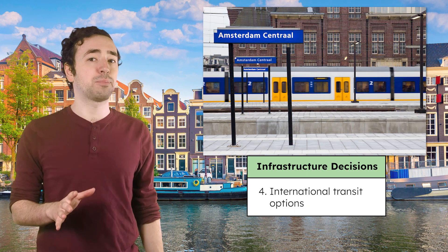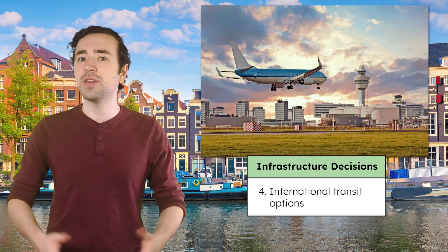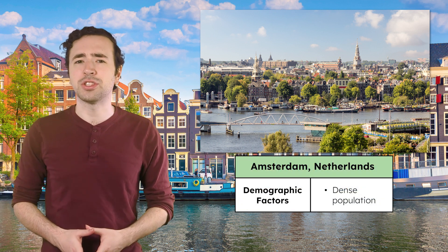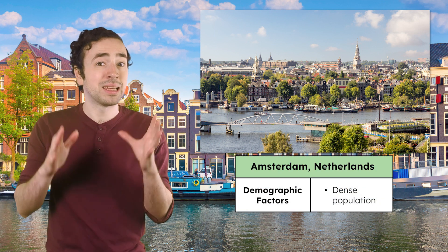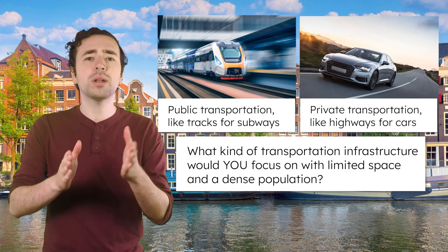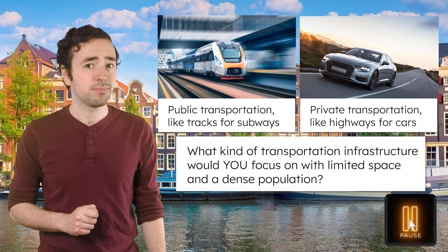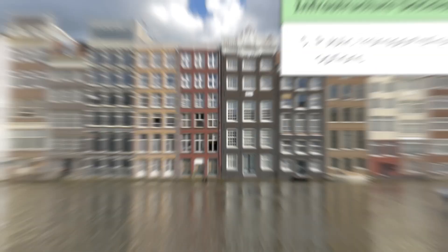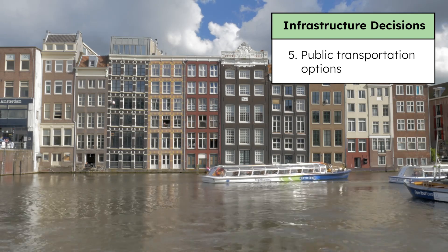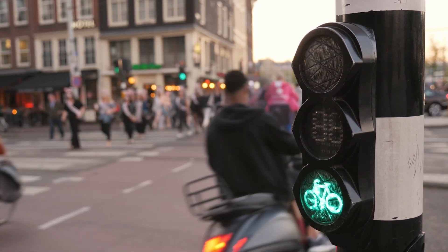Amsterdam also provides multiple options for visitors. You can get there by high-speed train from major European cities like Paris and London, or take a plane via Amsterdam's Schiphol Airport. But how do visitors get around once they arrive? Amsterdam's population is pretty dense, partly because the city is surrounded by water and doesn't have much space for huge highways or parking lots. Amsterdam's urban planners prioritize public transit options like the metro, buses, and ferries. The city even has over 300 miles of bike lanes, popular with both visitors and locals.